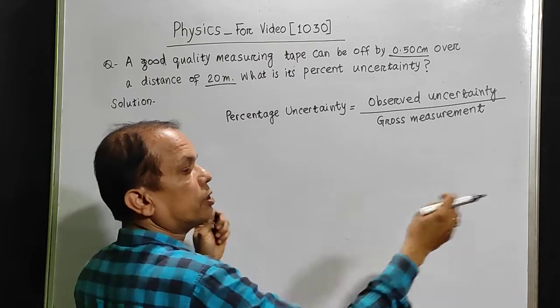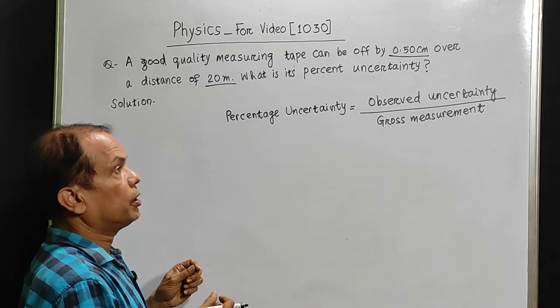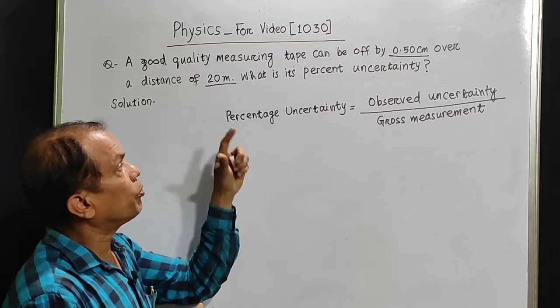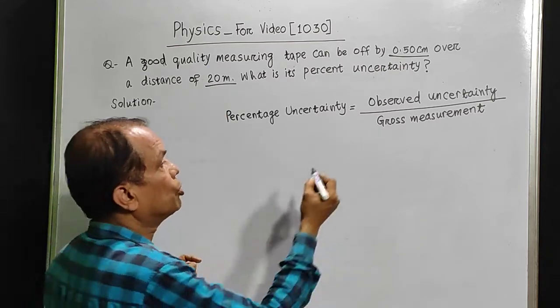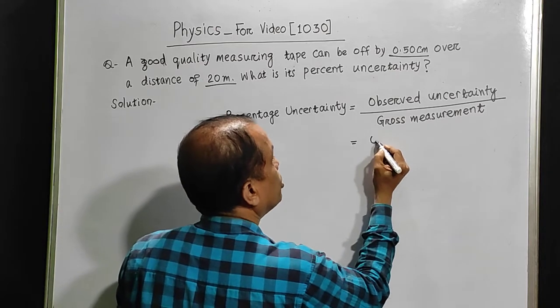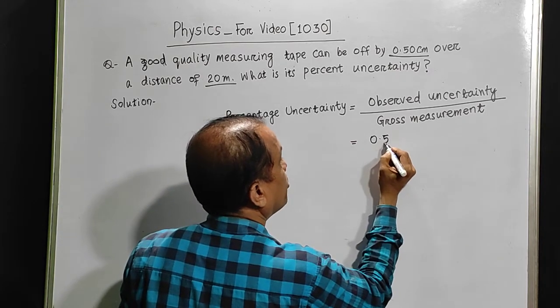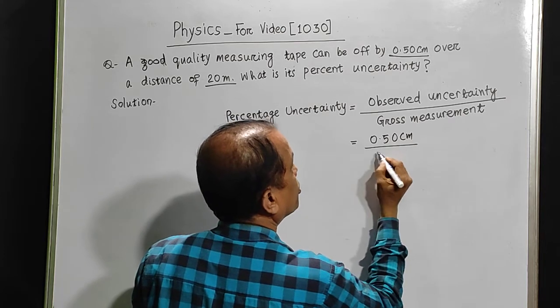While measuring a very large distance, due to some mistake or problem of the tape, we may be off by a small measurement. So here it is 0.50 cm upon 20 meters.